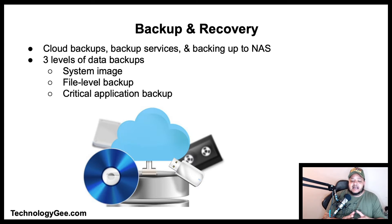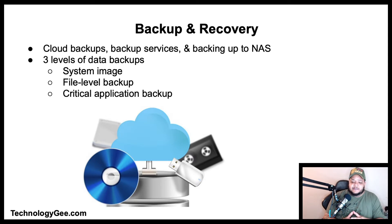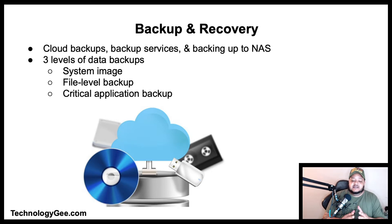Then you have a file-level backup, which backs up archive files such as documents, reports, and pictures. Then we have critical application backups, which backs up applications needed to restore business after a disaster. This can be accomplished with a system image or with VMs that can load and run very quickly.